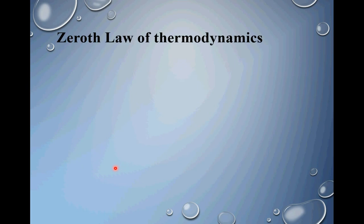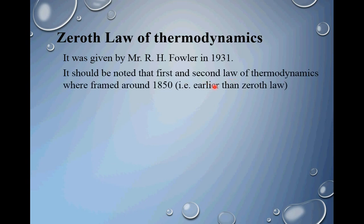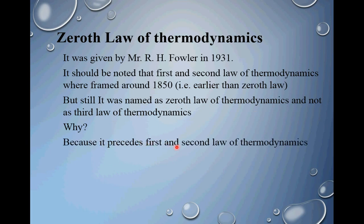Now, the zeroth law of thermodynamics. Before going to its statement, let us study some interesting facts. It was given by Mr. R. H. Fowler in 1931. It should be noted that the first and second laws of thermodynamics were framed around 1850, earlier than the zeroth law. But still, it was named as zeroth law of thermodynamics, not as third law of thermodynamics. The reason is that it precedes the first and second law — it comes before them — and hence it was named zeroth law.